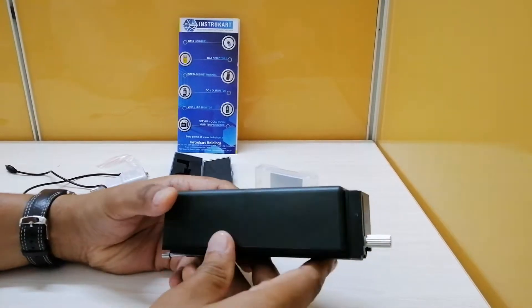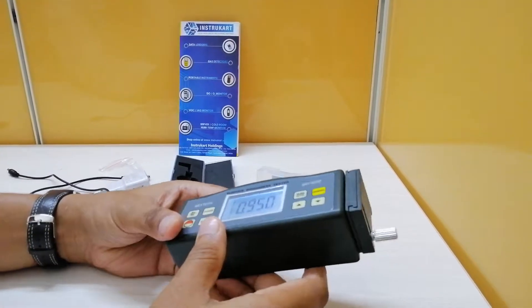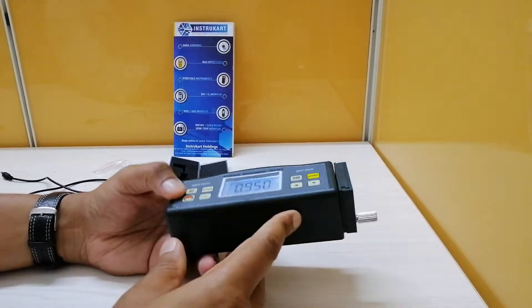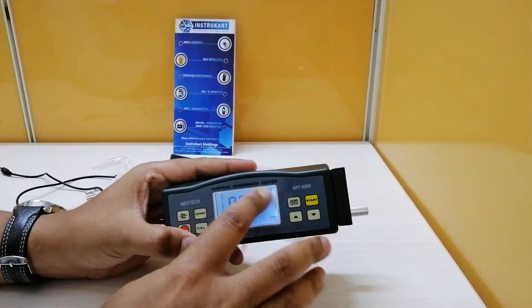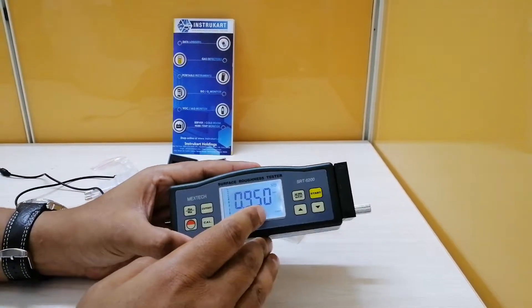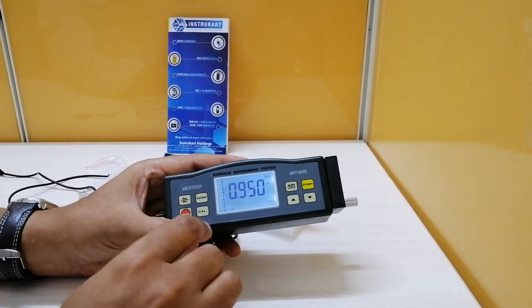Manual and automatic shutdown is also provided. Coming to the specifications, it has a four-digit display and a 10mm LCD with blue backlight. The parameters it shows are RA and RZ.